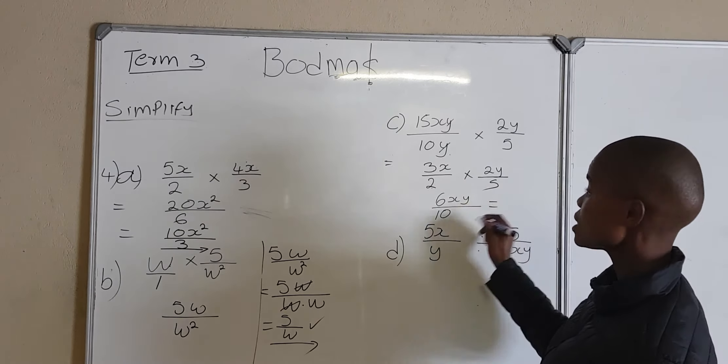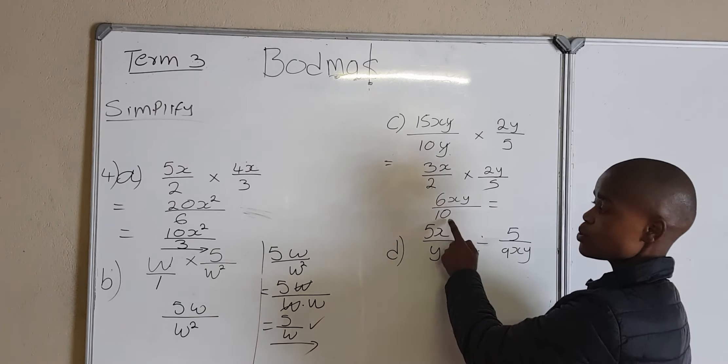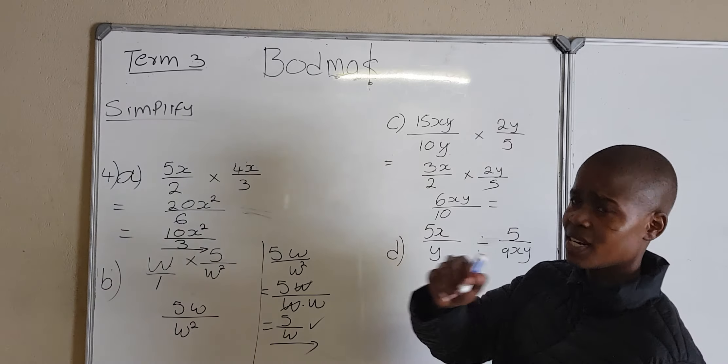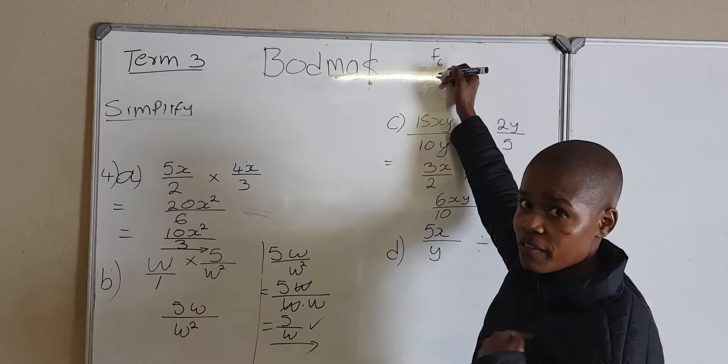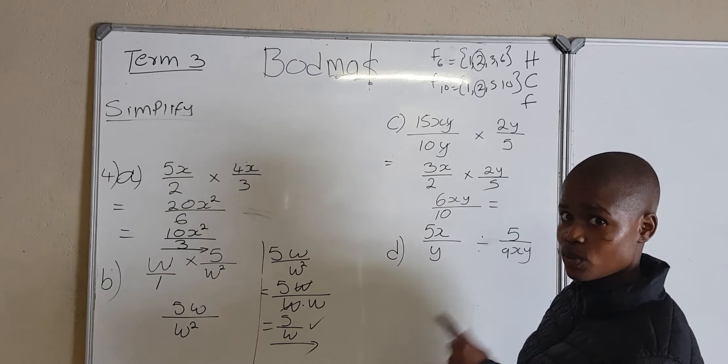Now I have to simplify this fraction because I've got 6 over 10. I look for the highest common factor that goes into both 6 and 10. Factors of 6: 1, 2, 3, and 6. Factors of 10: 1, 2, 5, and 10. When I simplify, I look for the highest common factor — the highest common factor is 2. How many times does 2 go into 6? Three times. How many times does 2 go into 10? Five times.